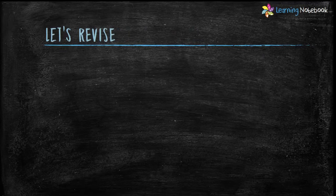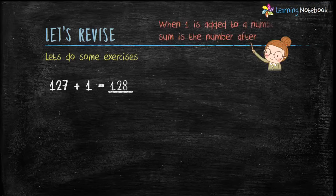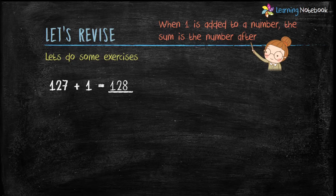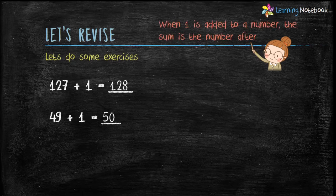Let's revise these facts through some exercises. 127 plus 1 equals — the answer is 128, which is according to fact 2: when 1 is added to a number, the sum is the number after. Similarly, 49 plus 1 equals — the answer is 50, based on the second fact.